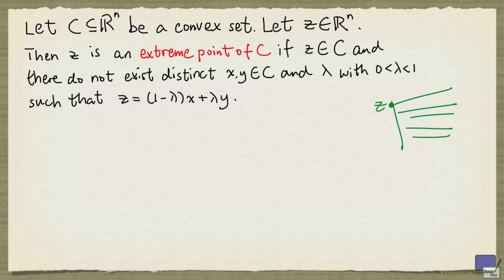For example, if you look at this z here, no matter how small a line segment that you draw that contains the point z, at least one of the ends of the line segment is going to be outside the set. And this seems to be a reasonable definition for corners for polyhedra in n dimensions.